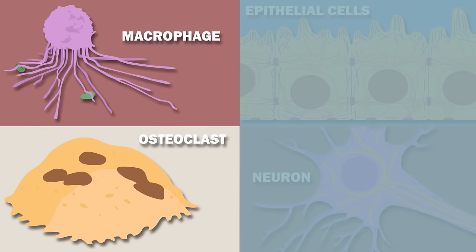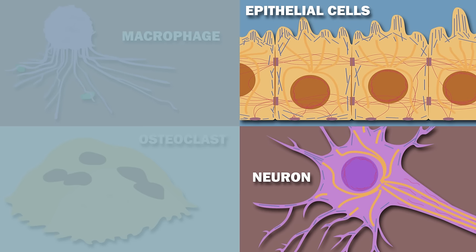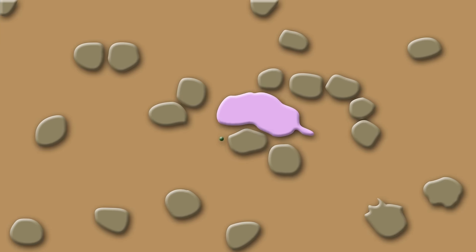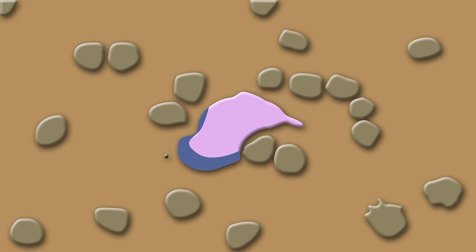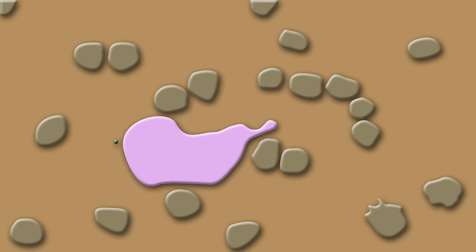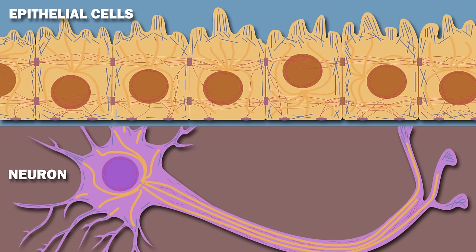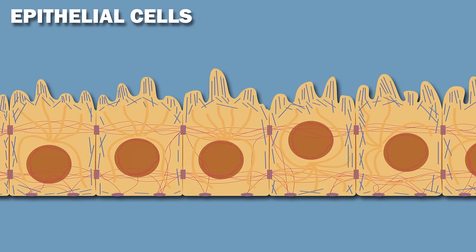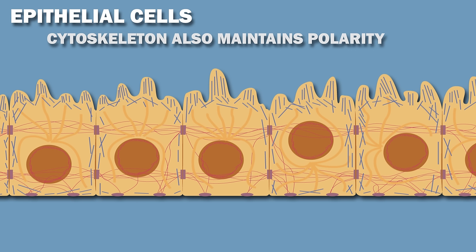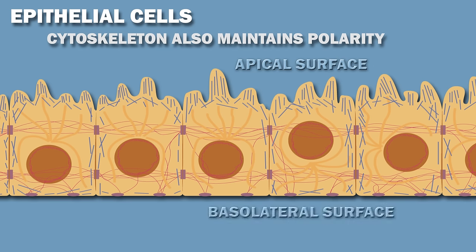Some cells in your body require rapid rearrangement of your cytoskeleton, while others require the maintenance of stable structures. A white blood cell pursuing a bacterium is able to rapidly move thanks to a perpetually shifting leading edge of actin. Meanwhile, an established neuron or epithelial cell requires a more stable cytoskeletal structure. In the case of epithelial tissues, the cytoskeleton also maintains polarity over the course of the cell's lifetime. Specialized cell surface protrusions face the lumen from the apical surface, providing more surface area for the transfer of nutrients, while the basolateral surface is much flatter.